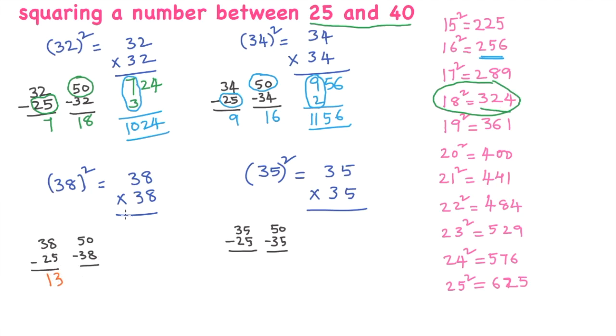So you write 13 here. Difference between 50 and 38 is 12. 12 square is 144. Add these two numbers: 13 plus 1 is 14, 1444. So 38 whole square is 1444.